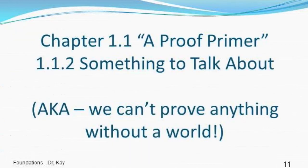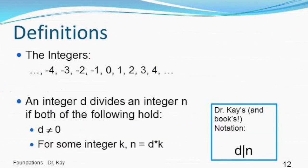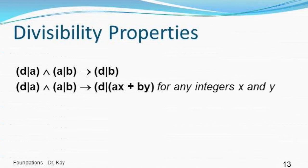Okay, so we're on to 1.1.2, something to talk about. This is just a section that's going to give us some things to write proofs about. In this case, we're going to write proofs about the integers. So the integers is the infinite sequence of numbers: negative, zero, positive, all whole numbers, right? And we're going to talk about an integer dividing another integer. So D divides an integer N if D isn't zero, and for some integer K, N is D times K, right? And the book and I actually agree on notation for this one. So this says D divides N. Here's a couple of divisibility properties. I want you to just look at this and say, yeah, that looks right to me. So if D divides A and also A divides B, then D, of course, divides B.